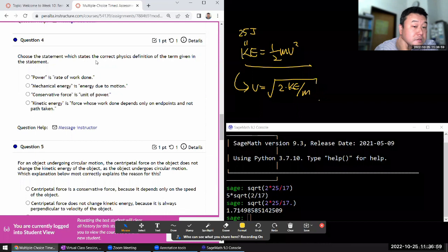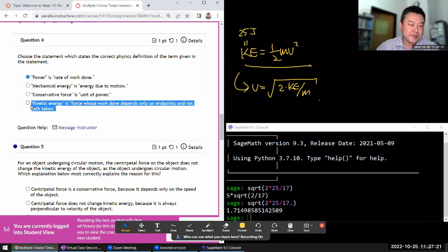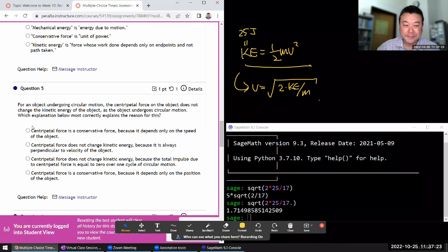Choose the statement which states the correct physics definition. Power is the rate of work done. Mechanical energy includes potential energy, so this is not correct. So that would be correct. Let me just double check. The conservative force is not that. Kinetic energy is what? So by the way, this is dynamically generated, which gives these nonsense choices from time to time.